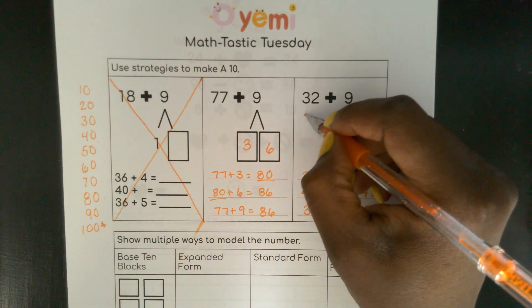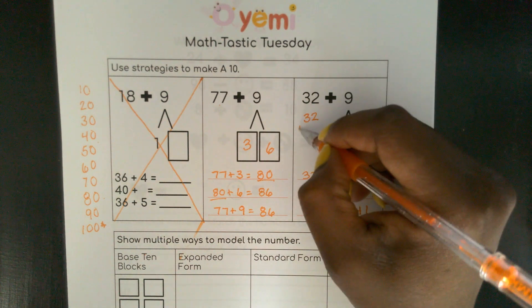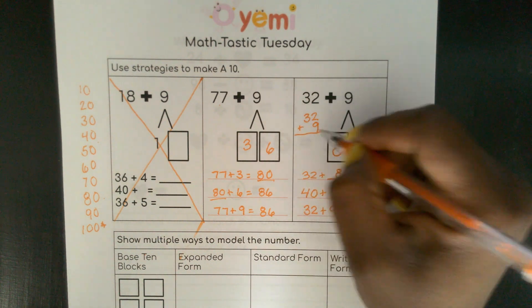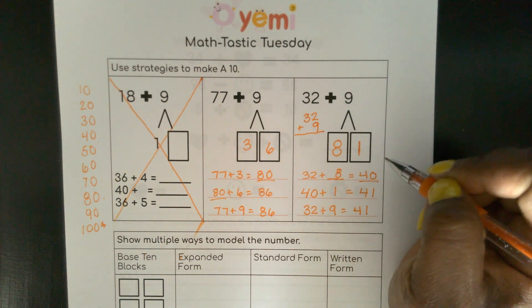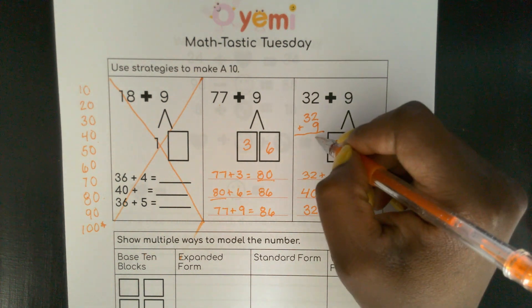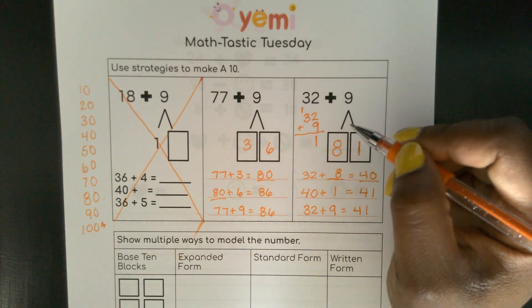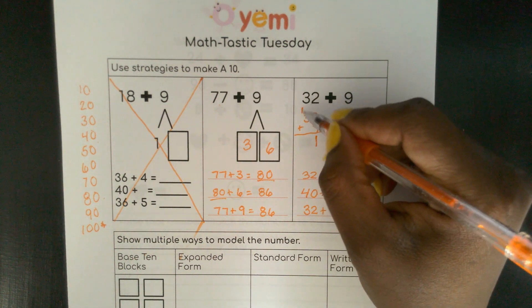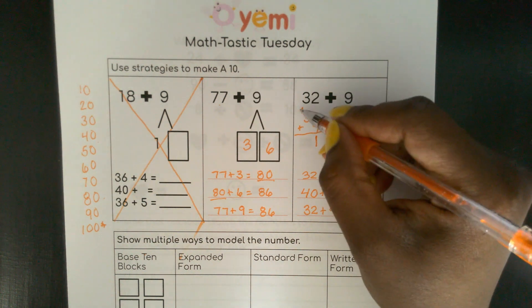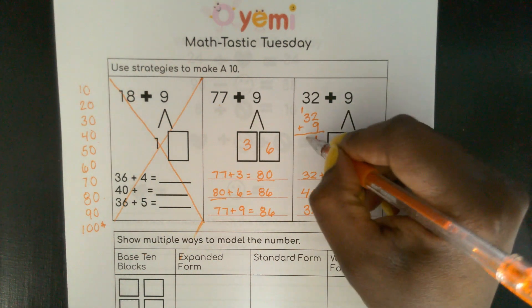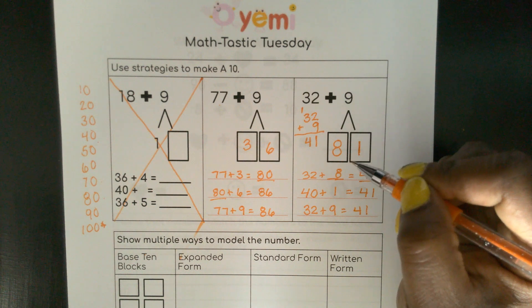For those of you who like the standard algorithm, I can do it for this one and the other one. 9 plus 2 equals 11. So I'll put my 1 here, and then 1 to represent the 10. Now, 3 plus 1, 30 plus 10, is 4. So I have 41.